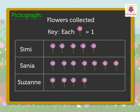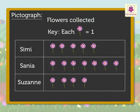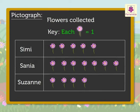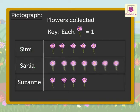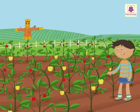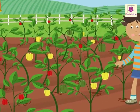Now let's see how we can read the pictograph of the flower farm example. The title 'Flowers Collected' tells us the pictograph is about the number of flowers collected. The labels give us the information of who collected the flowers. The key tells us that each flower picture is equal to one flower. Hence from the pictograph we can say Simi collected five flowers, Sanya collected seven flowers, and Suzanne collected four flowers.